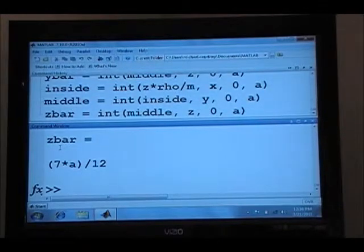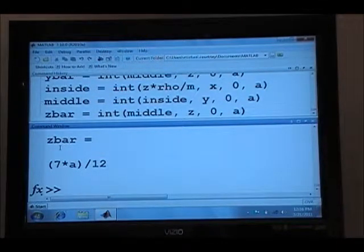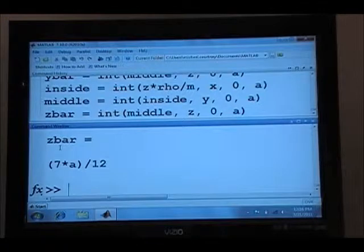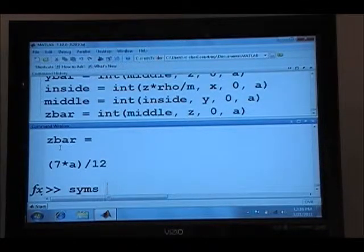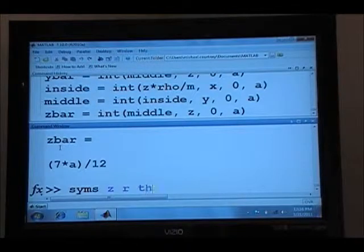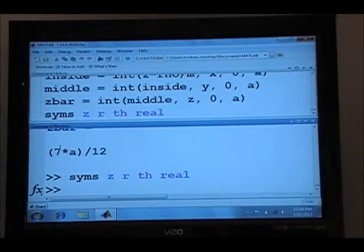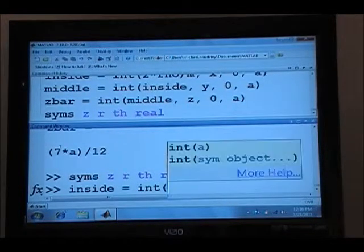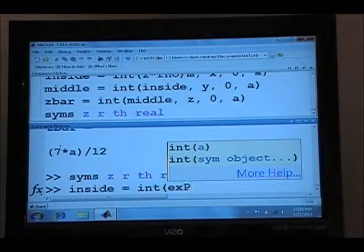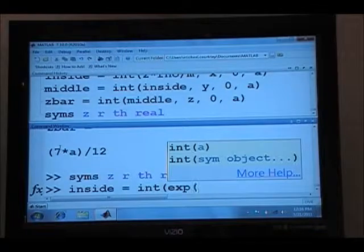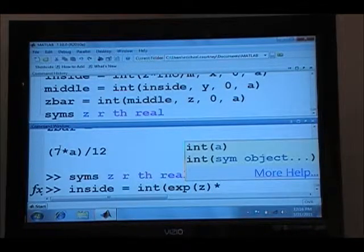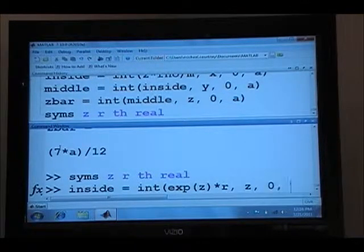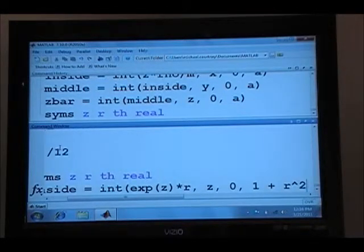Alright, so here we are in MATLAB and I need to correct, I wrote as our limits of integration a moment ago, the upper limit in z I wrote as one plus x squared plus y squared. And of course we'd convert that to r squared. So we want to sims z, r, and theta real. And then we make our inside integral equal to the integral of e to the z times r first over the variable z. From zero to one plus r squared.